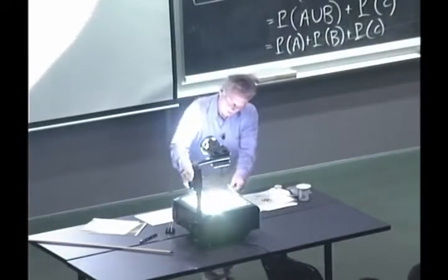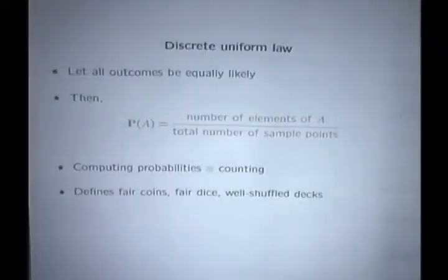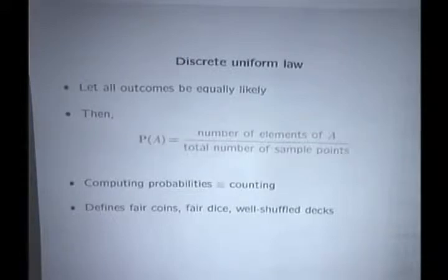This example is a special case of what is called the Discrete Uniform Law. This model obeys the Discrete Uniform Law if all outcomes are equally likely. It doesn't have to be that way. That's just one example of a probability law.